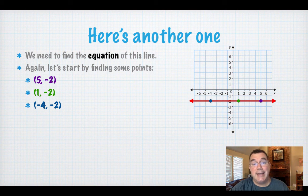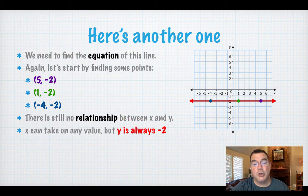So once again, x is just a bunch of random numbers, but y is always -2. So my equation again is y equals -2.